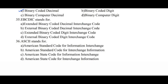Question number thirty-five: EBCDIC stands for — option A, Extended Binary Coded Decimal Interchange Code, is the right answer. Question number thirty-six: ASCII stands for — option A, American Standard Code for Information Interchange, is the right answer.